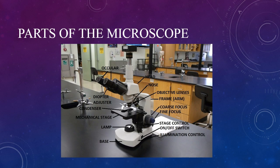The diopter adjuster is the grooved ring that surrounds the ocular, generally on the left side. The head contains the mirrors that reflect light up through the oculars. The nose rotates under the head and houses the objective lenses.